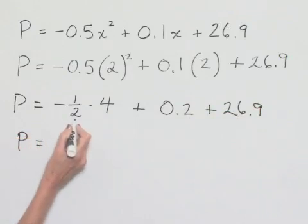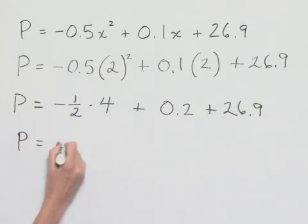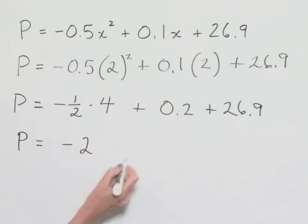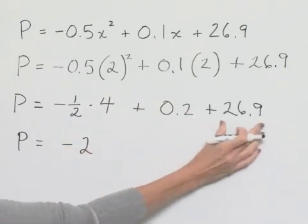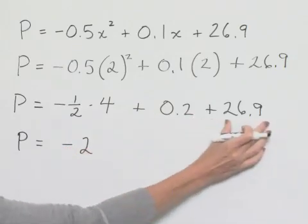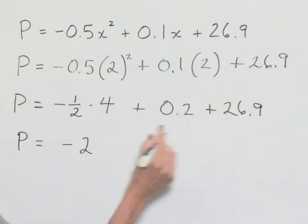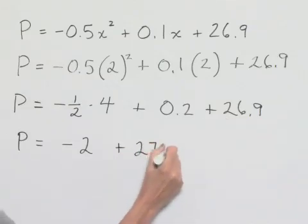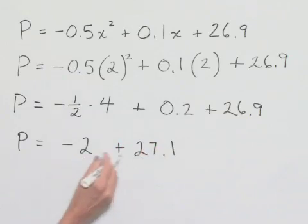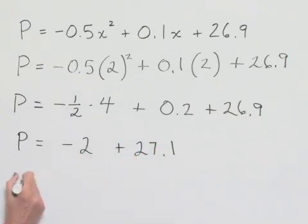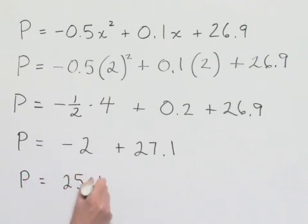Let's go ahead and do the multiplication. Negative 1 half times 4 is going to give us a value of negative 2. We can go ahead and add our decimal representations here. We have 2 tenths plus 26 and 9 tenths. That's going to give us a value of 27 and 1 tenths. And now subtracting 2 from 27 and 1 tenths gives us a value of p as 25 and 1 tenths.